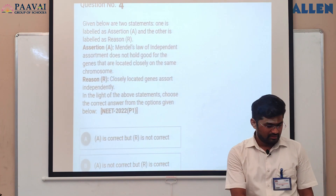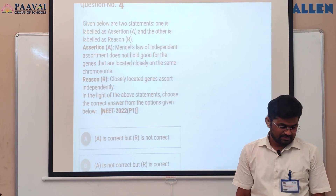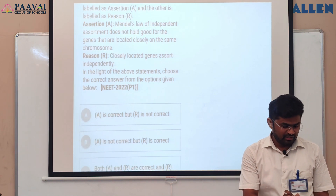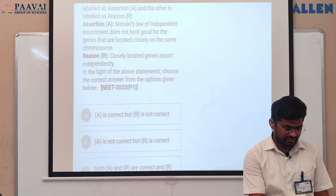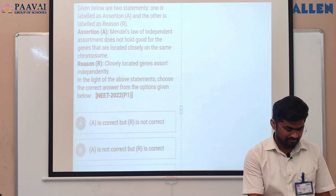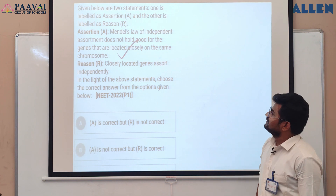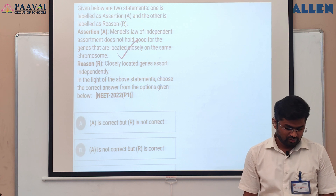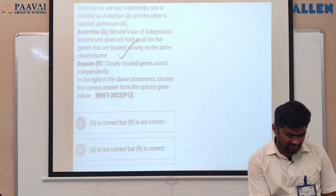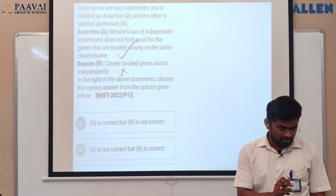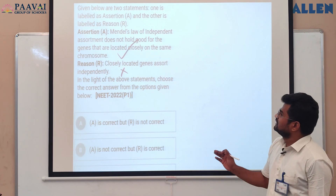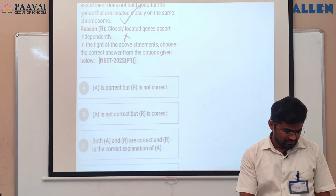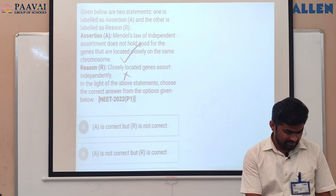Question number four gives two statements related to Mendelian experiments. The assertion states: Mendel's law of independent assortment does not hold good for genes that are located closely on the same chromosome. The assertion is correct. However, the reason states that closely located genes assort independently — this reason is wrong, because closely located genes will not assort independently. So the correct answer is: assertion is correct but reason is not correct.